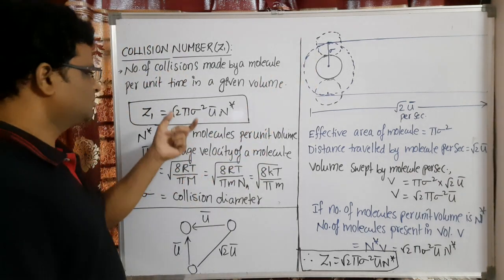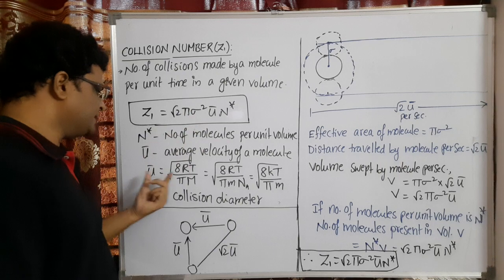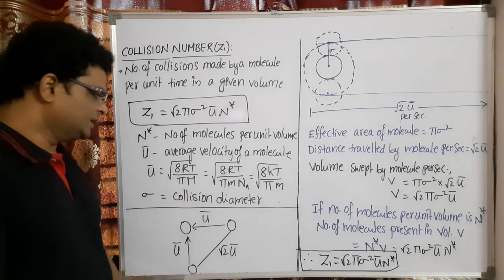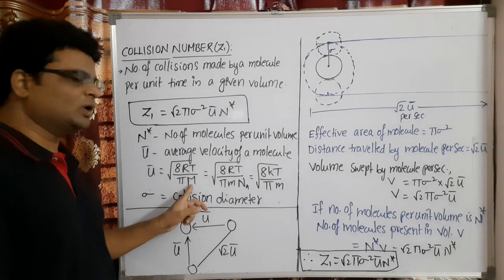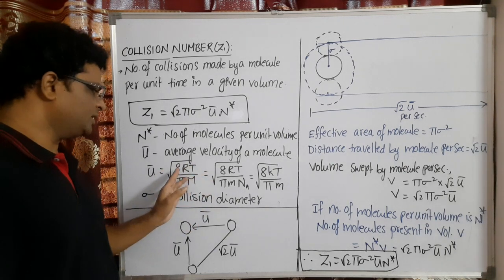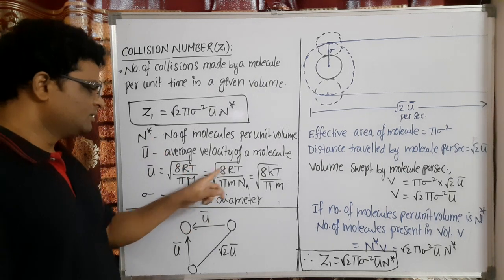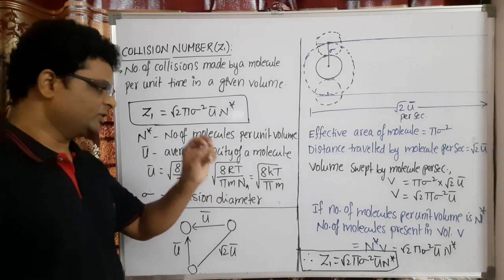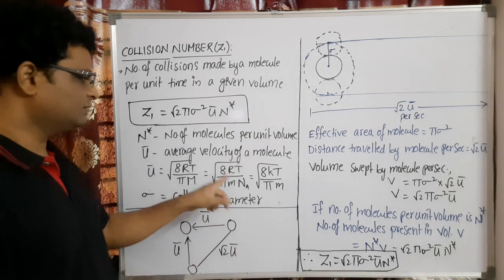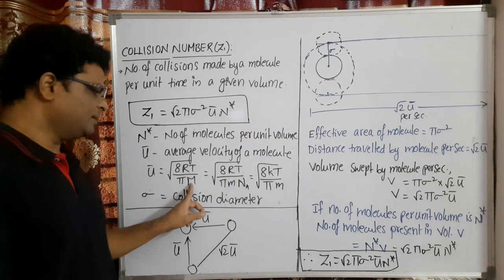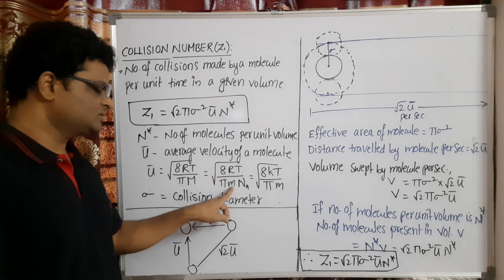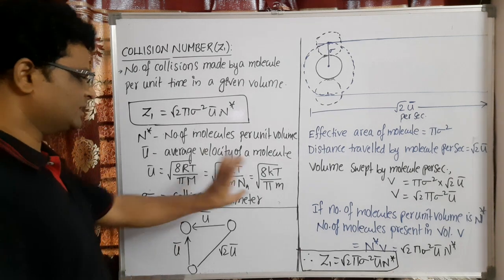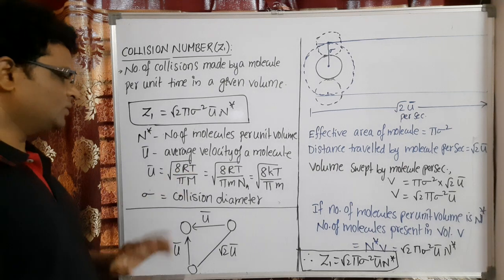U bar is called average velocity and is related to temperature by the formula: U bar = √(8RT / πM), where capital M is the gram molecular weight of the gas, R is the gas constant, and T is the absolute temperature. This can also be written as √(8KT / πm), where small m is the mass of each molecule. The conversion is: R/N_A = K, the Boltzmann constant, and capital M = m × N_A. σ is the collision diameter.